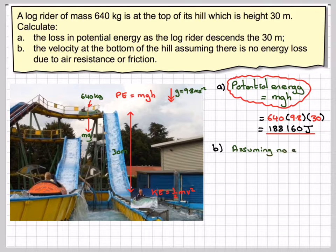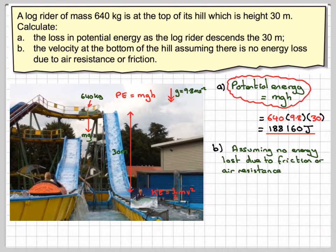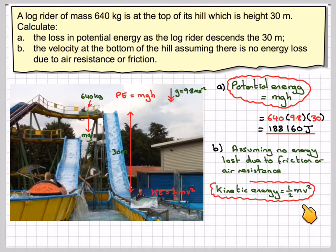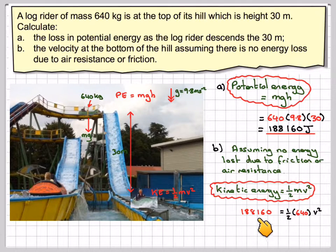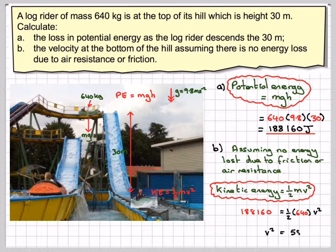And (b), calculating the velocity: assuming there's no energy loss due to friction or air resistance, energy is conserved. So the kinetic energy equals one half mv squared — that's one half times 640 times v squared — equal to 188,160 joules. Rearranging, v squared is 588, and the actual velocity is the square root of that, which is 24.2 metres per second.